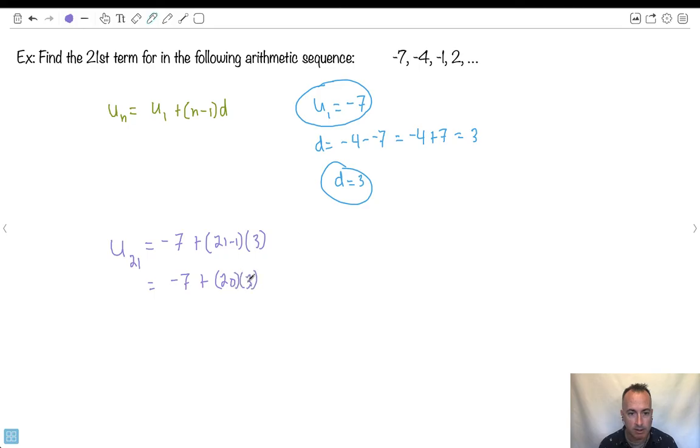Well, 21 minus 1 I'll put in. All that times 3. If I do that, let's see, now I've got -7 plus, and 21 minus 1 is just 20, so that works. I'll do this all without a calculator, so let me see. So I have -7 plus, let's see, 20 times 3 is the same as 2 times 3, which is 6, and just add a 0, so it's 60. And 60 minus 7 is 53.